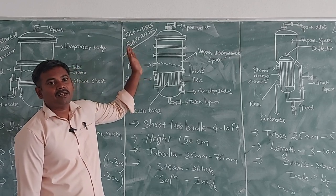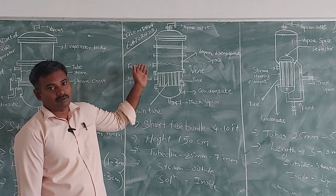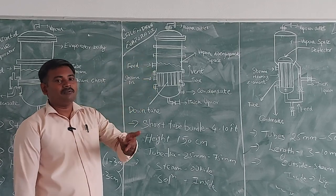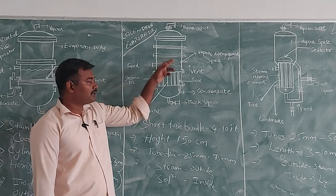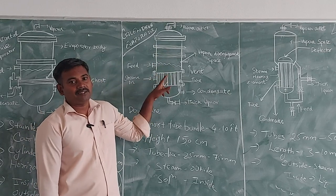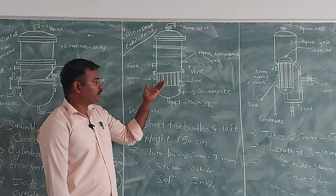So the other name of the Calandria Evaporator is the Short Tube Evaporator or we can call it as a Vertical Tube Evaporator. Why we are calling Vertical Tube Evaporator? Inside the evaporator you will be having the tubes which will be placed in the vertical manner. So you can see in the diagrams.